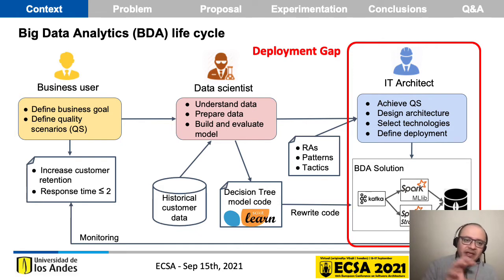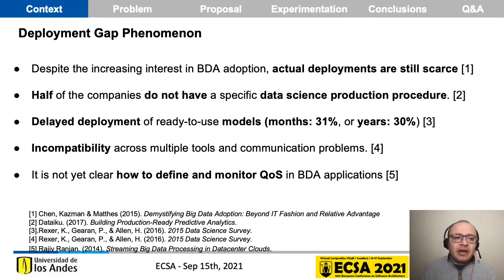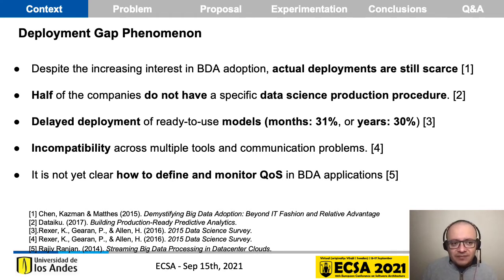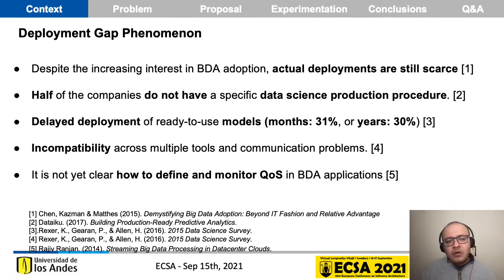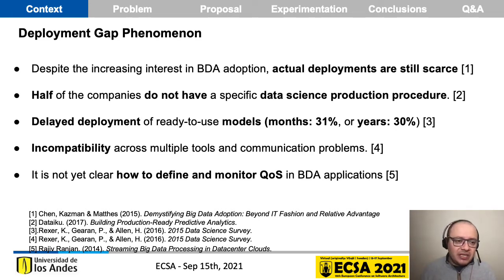This step from the data lab to the productive environment is where we found a problem called the deployment gap. The deployment gap phenomenon was coined by Shane, Kassman, and Mathis in 2015, which basically defined that despite increasing interest in BDA adoption, actual deployments are still scarce. In previous surveys and studies, we identified that half of companies don't have a specific data science production procedure. Also, there is a delayed deployment of ready-to-use models, ranging from 31% taking months or 30% taking years to deploy these models. We also found incompatibility across multiple tools and communication problems regarding the different concerns and vocabularies from the different knowledge domains.